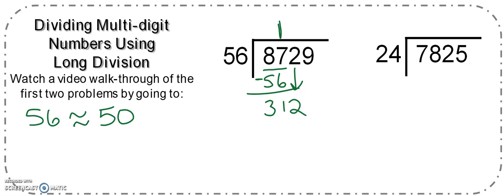So there I've got 312. Now using my strategy of thinking of 56 like 50, I'm going to think of 312. What's 312 really close to? Almost the same as 300. So how many groups of 50 could go into 300? Well, I could make six groups of 50 because 5 times 6 is 30. So 6 times 50 is 300. I'm going to try that and see what happens.